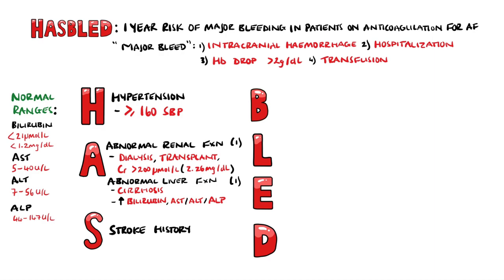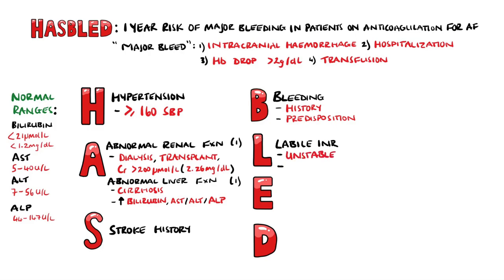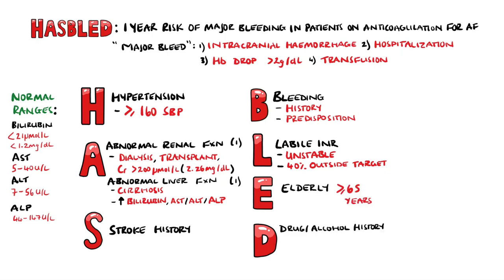S stands for a history of stroke, and B stands for bleeding, which includes previous major bleeding or a predisposition to bleeding. L is for a labile INR, meaning an INR which is not stable and spends more than 40% of the time higher than the therapeutic range. E is for elderly, specifically over the age of 65. D is for a prior history of drugs or alcohol use, or for the use of medications that predispose to bleeding, such as antiplatelet agents or NSAIDs. One point is available for each of these.